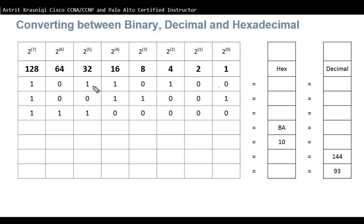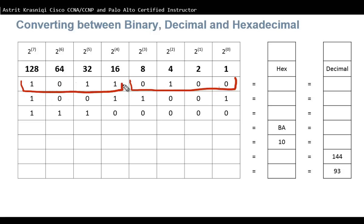The best way to convert from binary to hexadecimal is to split the binary digits into four bits. I'll split them into the right four bits and then the left four bits. These bits have positional values of 1, 2, 4, and 8 — and the same on the other side: 1, 2, 4, 8.